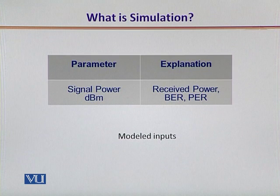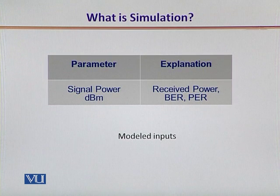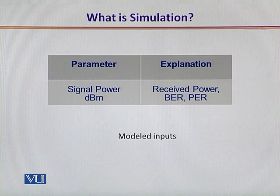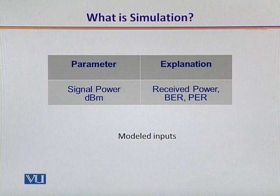In order to understand different kinds of inputs with respect to the communication scenario we looked at, the first important parameter is the signal itself. Signal power has a direct relationship with the power received on the receiving side of the transmission channel, corresponding bit error rate and packet error rate.